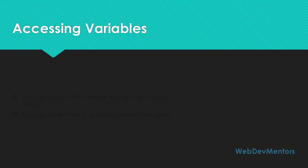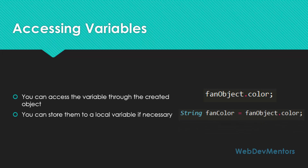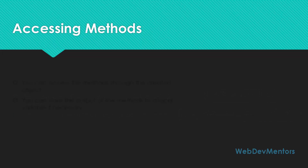So how do you actually access the variables of a class through the object? You can access the variables through the created object. The code for that will look like this: String fanColor is equal to fanObject.color. So I am creating a string variable fanColor and storing the value of the object's color into it.